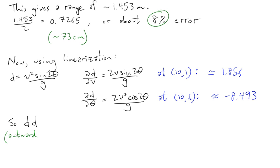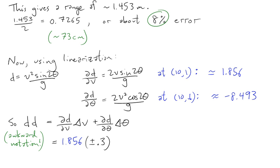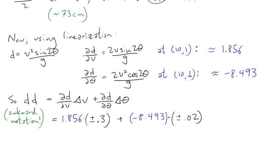So then, dd. Now that's some awkward notation. It's the differential of the distance traveled. At the point 10 and 1. Well, in general, it's the partial times delta v plus the partial with respect to theta times delta theta. And at the point 10 and 1, you get 1.856 times plus or minus 0.3. And then minus 8.493 times plus or minus 0.02.